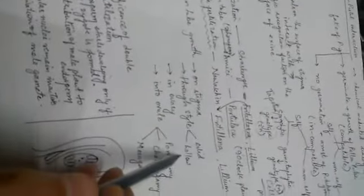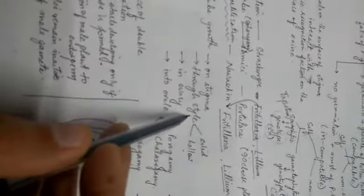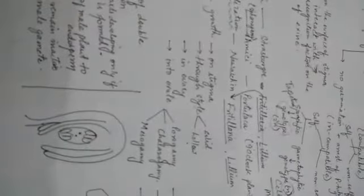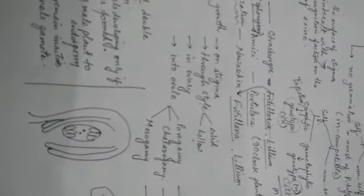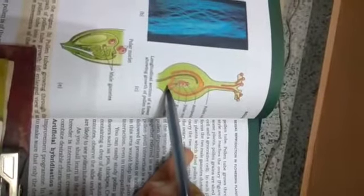It starts on stigma and enters into the style. Style in plants can be either a solid type or a hollow type. The growth of the pollen tube is going to be very fast in the case of hollow because there is already a space given by the plant. But in the case of solid type of style, the pollen tube has to do a lot of work and release enzymes to loosen up the cells so that it can slowly go down into the ovary.